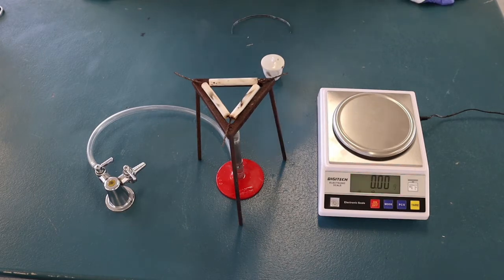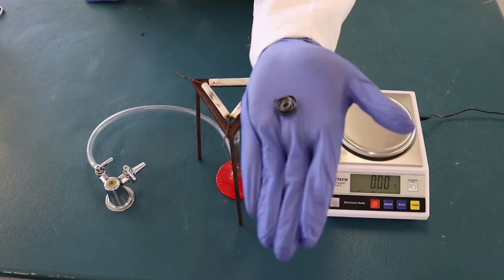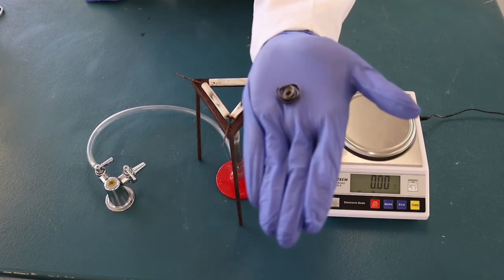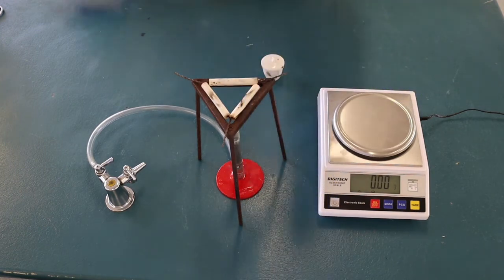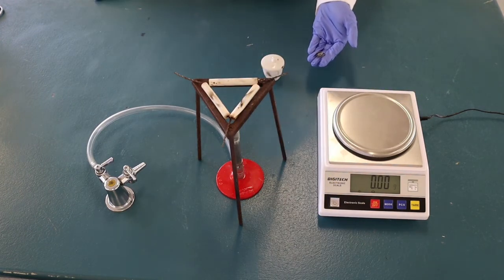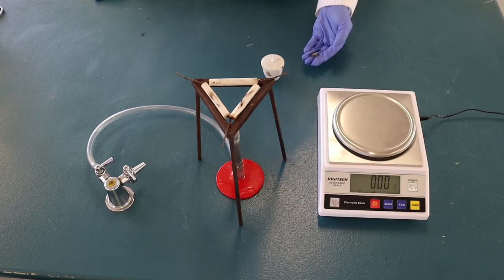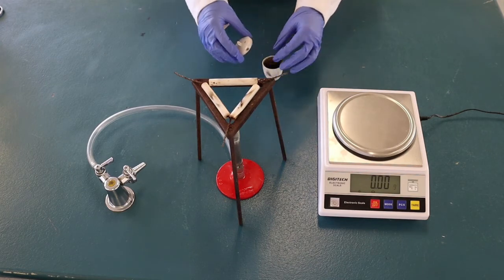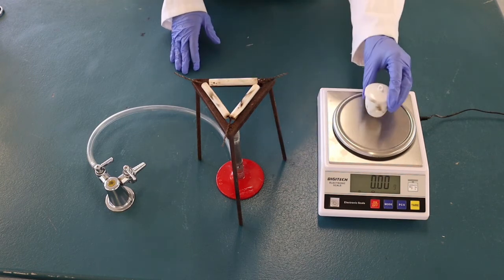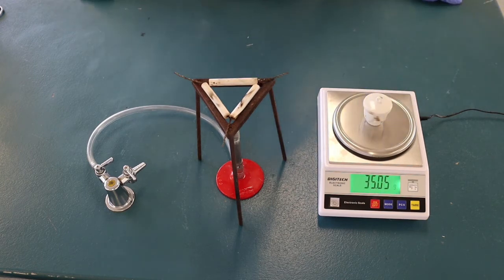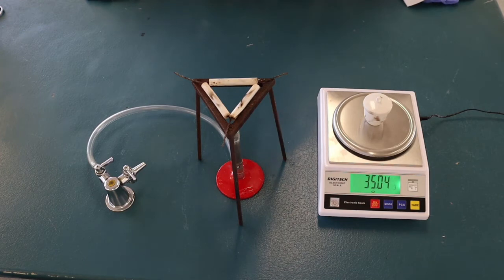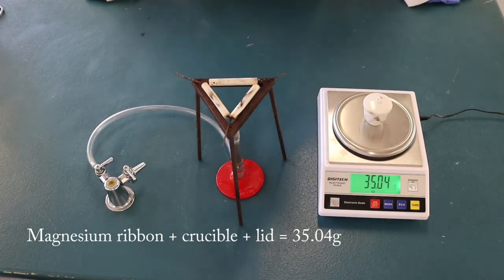Coil the piece of magnesium ribbon so that it fits inside the crucible. This is what the coiled magnesium ribbon looks like. Place the coiled magnesium ribbon into the crucible and weigh it on the electronic balance. Together, they weigh 35.04 grams.